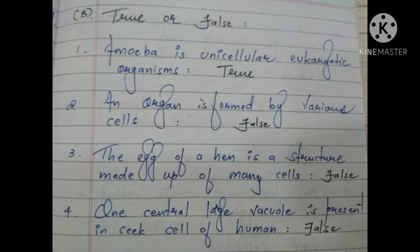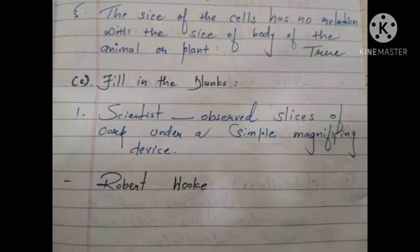Now talking about True or False. First one: amoeba is a unicellular eukaryotic organism — answer is true. Second one: an organ is formed by various cells — answer is false. Third one: the egg of a hen is a structure made up of many cells — answer is false. Fourth one: one large central vacuole is present in cheek cells of human — false. Fifth: the size of the cell has no relation with the size of the body of the animal or plant — true.